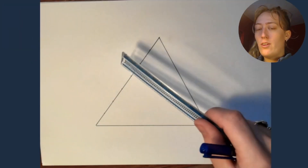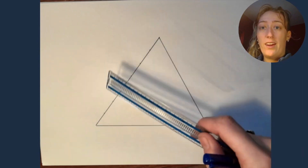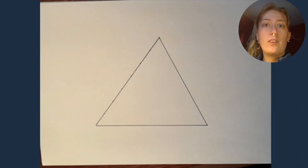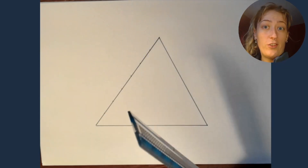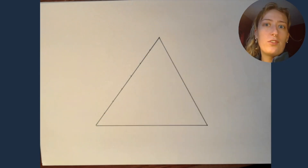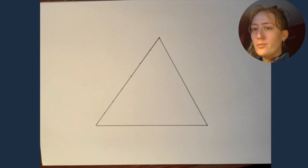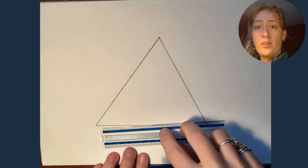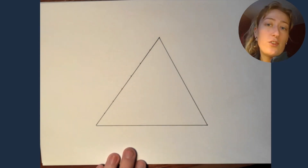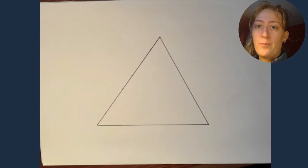For this construction, we're going to draw a very simple triangle. You could do a much funkier, much crazier looking triangle — I've chosen quite a simple one. I've just done this using my ruler, joining three lines together.